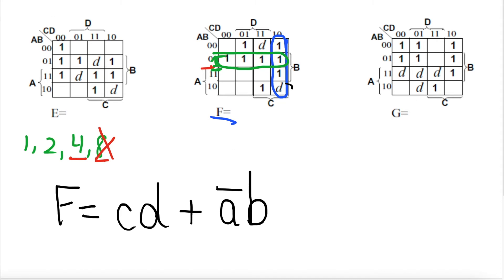C is 0 for the first column but C is 1 for the third column, so C is not consistent — it's cancelled. D is 0 for the first column and D is 1 for the second column, so D is not consistent and is cancelled from the equation as well. So for the green circle, the equation is ĀB.